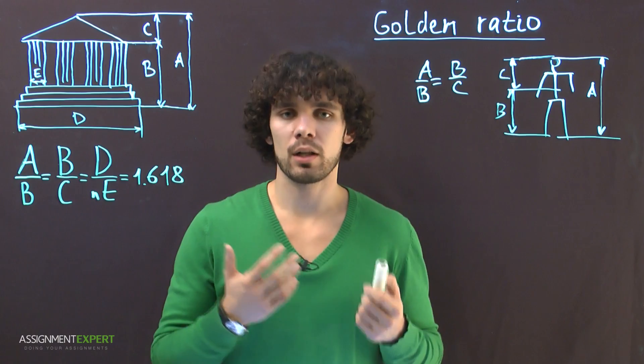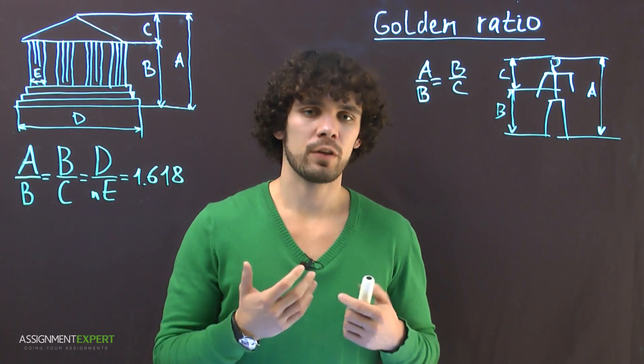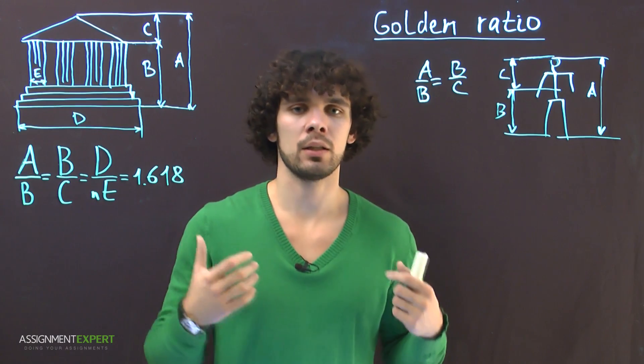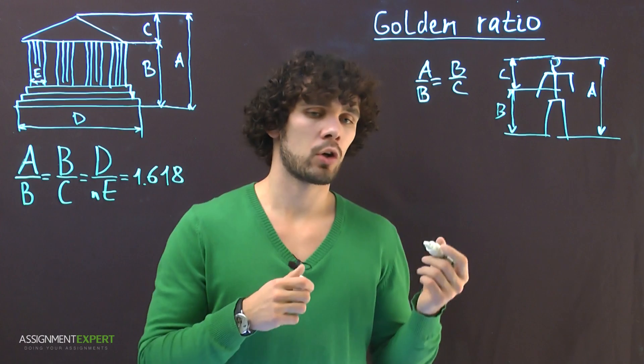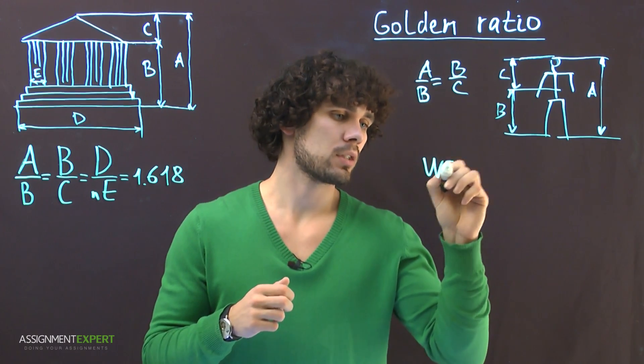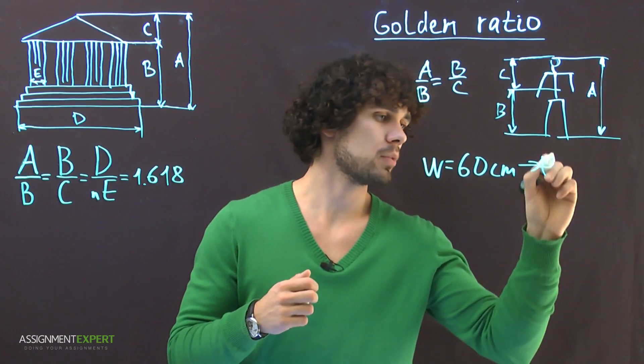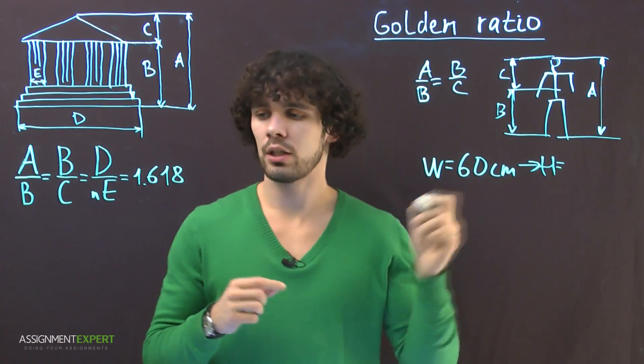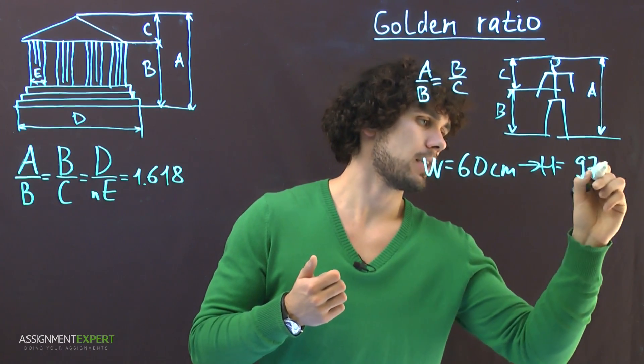So all we have to do is to multiply our waist circumference by the golden ratio to get the perfect circumference of shoulders for men or hips for women. For example, if we take a girl with waist circumference 60 cm, then her hips should be 60 times golden ratio and we get 97 cm.